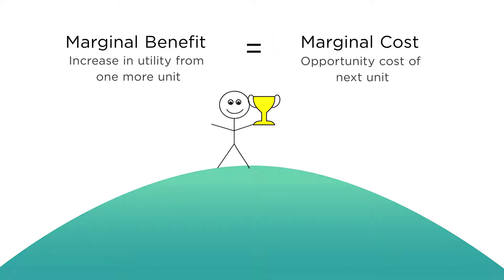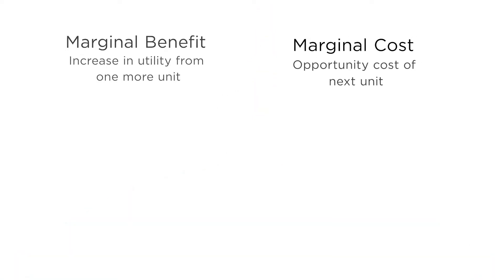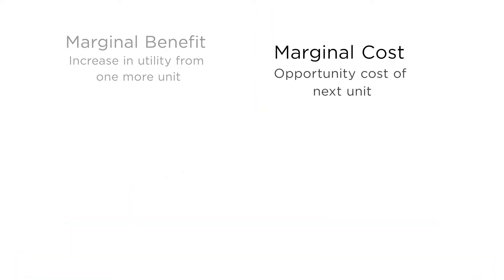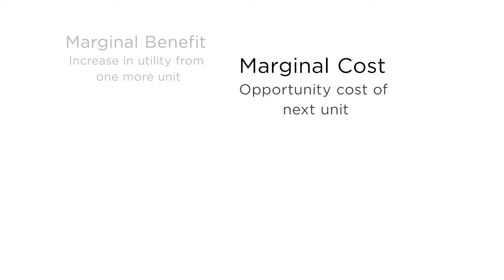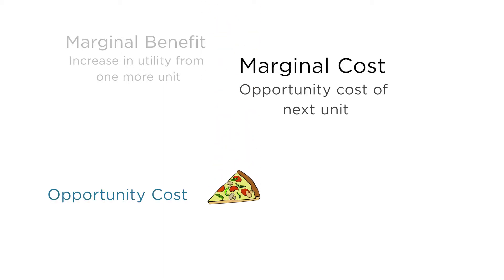So how do we measure the marginal cost of the next slice of pizza? Remember that your budget is fixed, so to eat more pizza, you must consume fewer cookies. Therefore, the opportunity cost of a slice of pizza is the cookies you could have had instead.